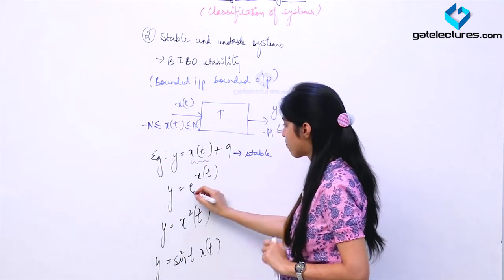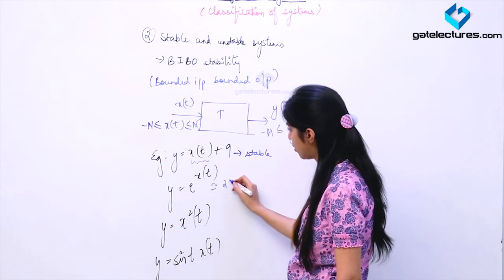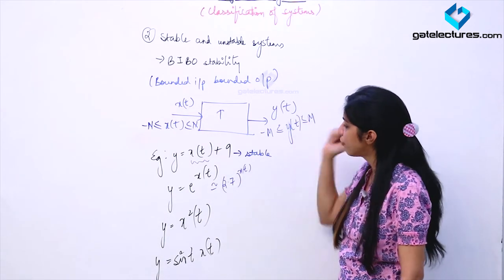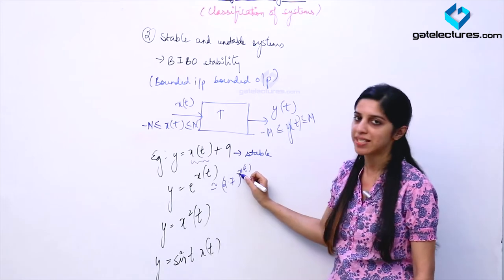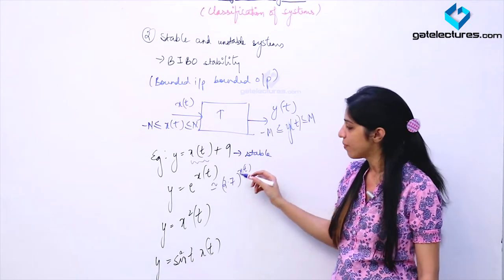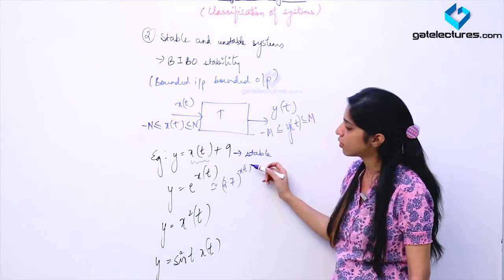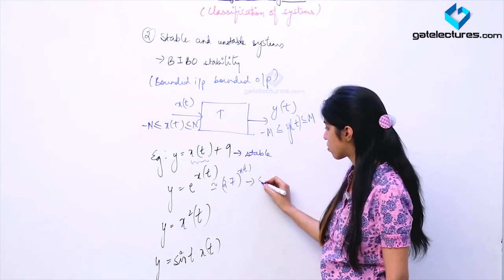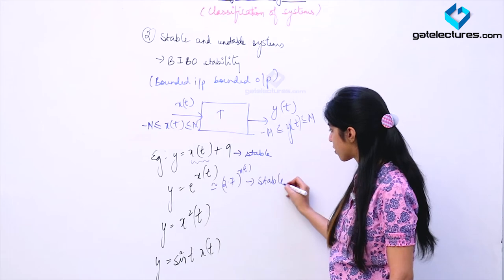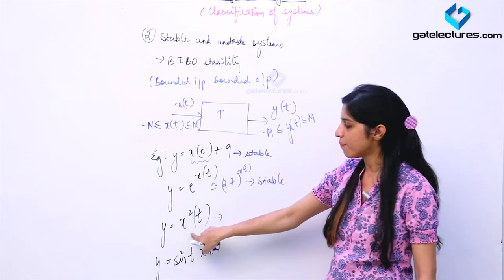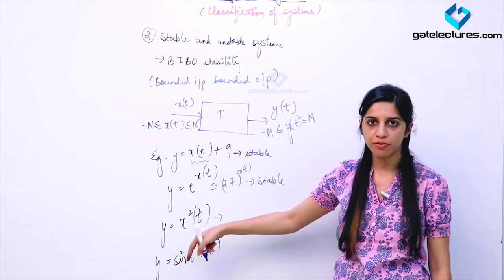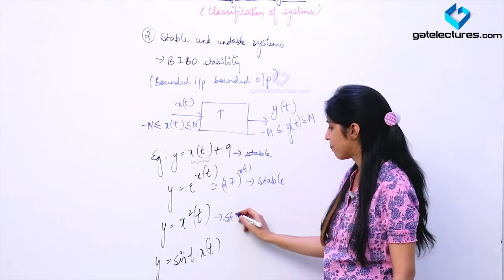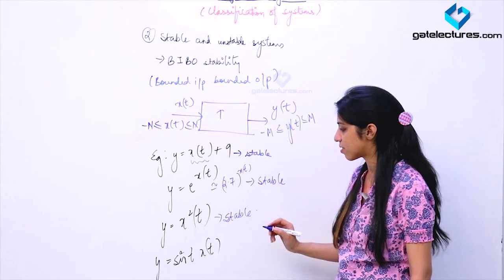Look at this second example. The value of e is approximately 2.7 to the power of some X(T). If this X(T) is bounded, if X(T) is having some fixed value, then 2.7 to the power of some fixed value is also going to be some bounded value. So this function is also going to be stable. Similarly, if X(T) lies between some fixed values minus N and N, then its square is also going to lie between some fixed values only, so it is also going to be a stable system.